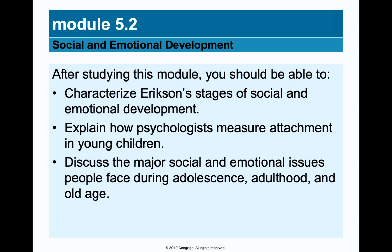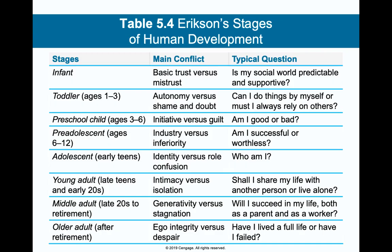Erikson's stages of human development cover the entire lifespan — from infant and toddler through preschool (3–6), pre-adolescent (6–12), teen years (12–18), young adult, mid-adult, and older adult after retirement. Each phase has characteristic conflicts. In adolescence, people are really concerned with identity. In middle adulthood, it's about solidifying roles as parent and worker. In older adulthood, it becomes a reflection: have I lived my life to the fullest and done everything I wanted to do?